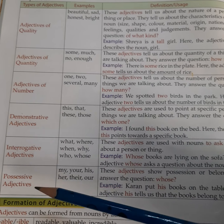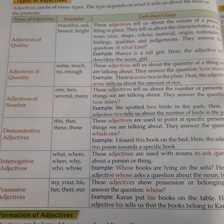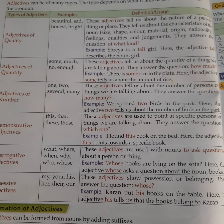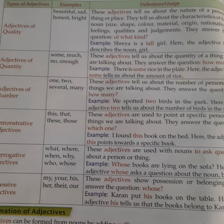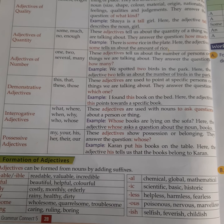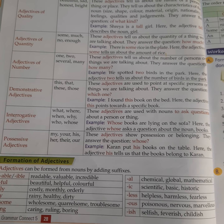Good morning students, this is the Grade 5 English grammar book and today we are going to start a new chapter, which is on page number 27, Chapter 5: Adjectives. If you look at the first part of this word, 'add' means to add something — to add some information. So adjectives are basically those words which add some more information.